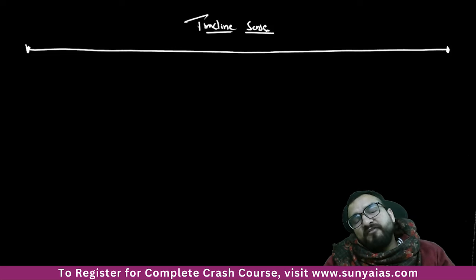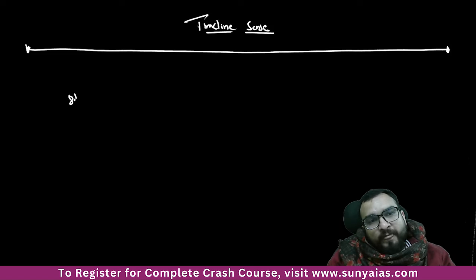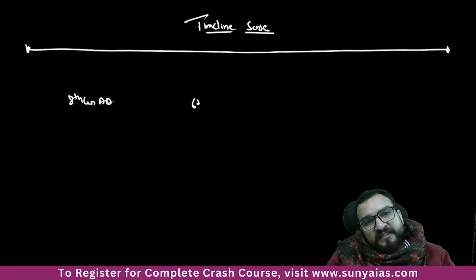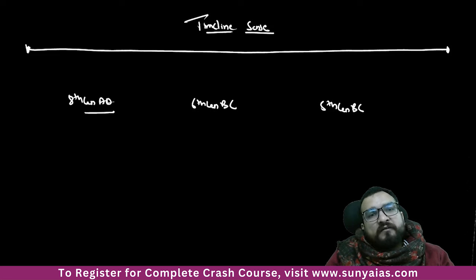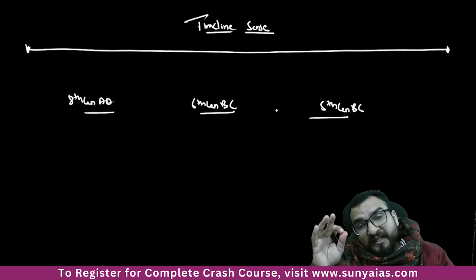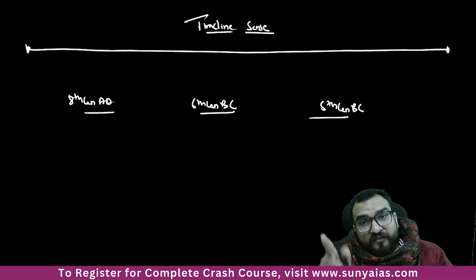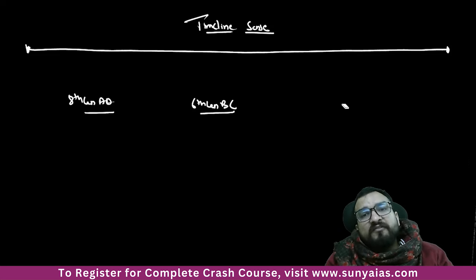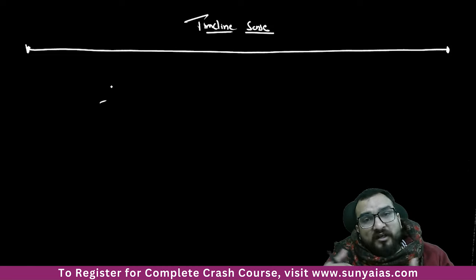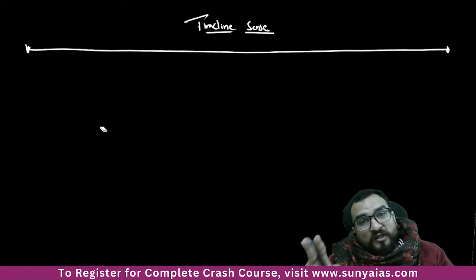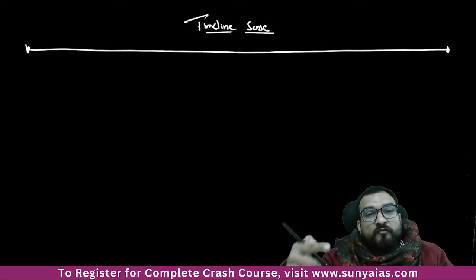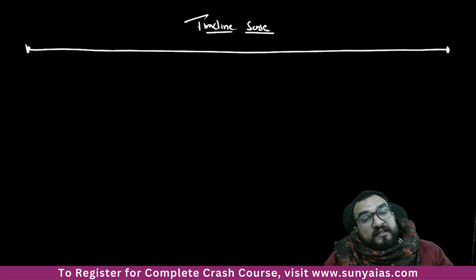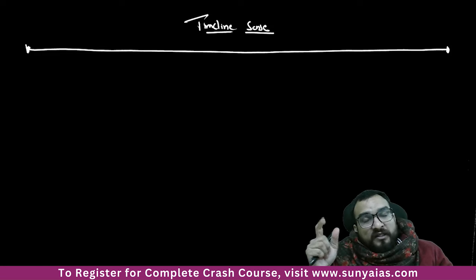If I ask what was happening in the 8th century AD, or the 6th century BC, or the 5th century BC — politically, what was happening — 90% of students will not be able to think very fast. This confusion is common. But when you see UPSC questions, they ask in a timeline way only — which dynasties were ruling in 8th century BC. Within seconds you have to know.